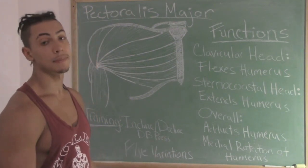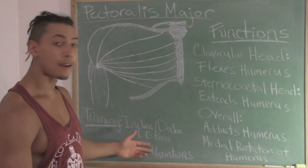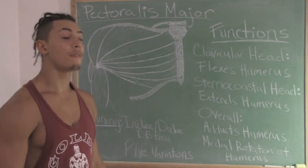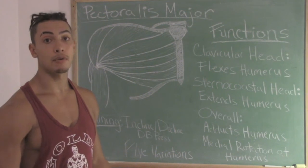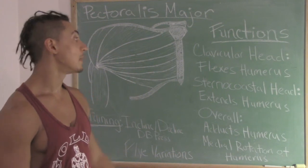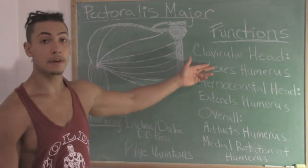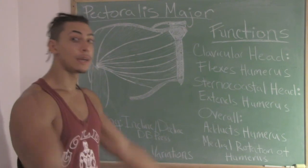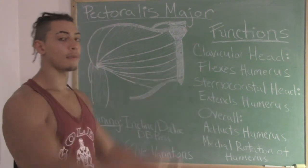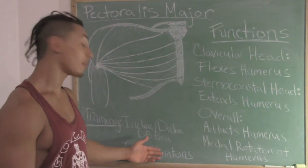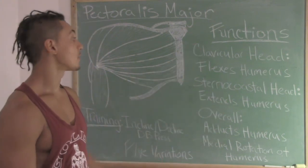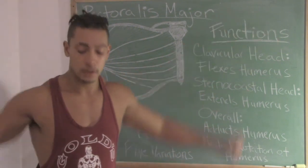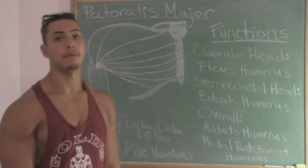For isolation movements, we have fly variations. A fly variation that would be great for building the clavicular head or upper chest would be low-to-high cable flies. A great fly variation for the sternocostal head would be high-to-low cable flies.